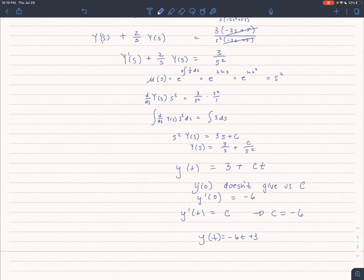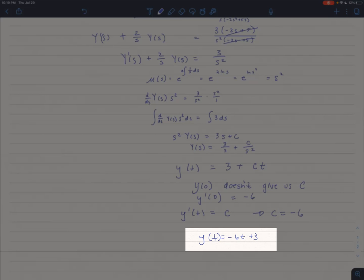Now, this is odd because we actually have to figure out what c is. y(0) wouldn't help because, well, t is 0 and c times 0 is 0. So, in order to get c, we're going to have to take the derivative of that, and then plug in y prime of 0, and that will give us the value for c, and that's how we end up with our final value of y(t) equals negative 6t plus 3.